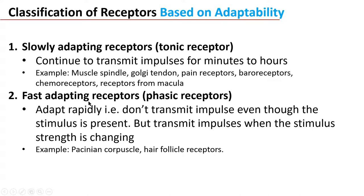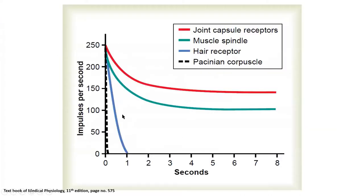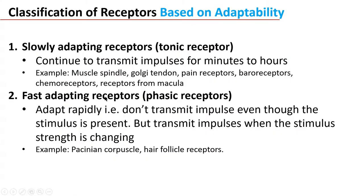Fast adapting receptors are phasic receptors. They adapt quickly and don't transmit impulses even though a stimulus is present; they transmit impulses only when the stimulus strength is changing. Examples include the Pacinian corpuscle and hair follicle receptors.